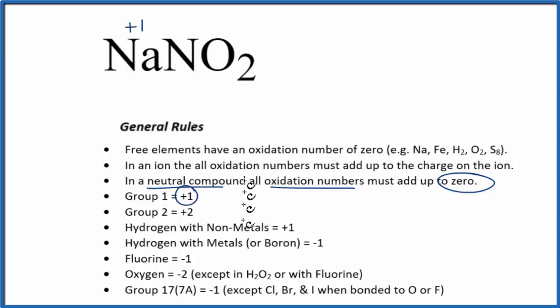Nitrogen, we don't see that here in our rules, but we do see that oxygen, that's going to have a minus two all the time, with a few little exceptions. So we're going to put minus two, and that's going to be for each oxygen atom. The nitrogen, though, we don't know. Let's call that x.